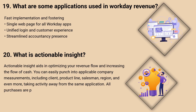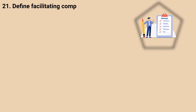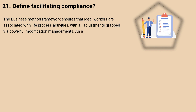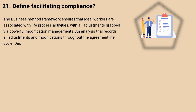All purchases are promptly available in records to give real-time visibility. 21. Define Facilitating Compliance. The Business Process Framework ensures that ideal workers are associated with lifecycle activities, with all adjustments captured via powerful modification controls. An audit trail records all adjustments and modifications throughout the agreement life cycle, decreasing review costs and verifying compliance.